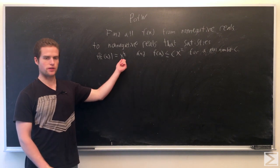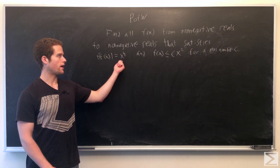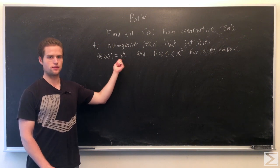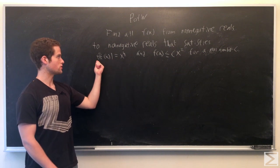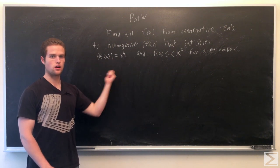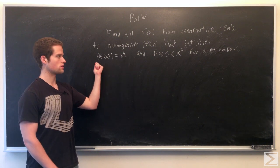So first note, the image of x to the 4th, x equals 0, that's for x equals 0, that's 0, and the image is actually all the non-negative reals, so that tells us the image of f is in fact all the non-negative reals, so f is in fact surjective.